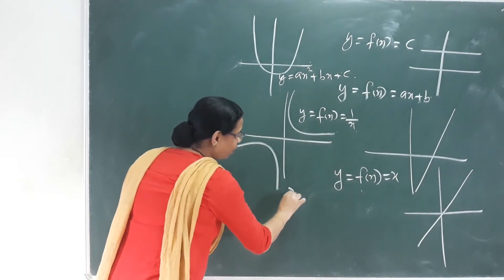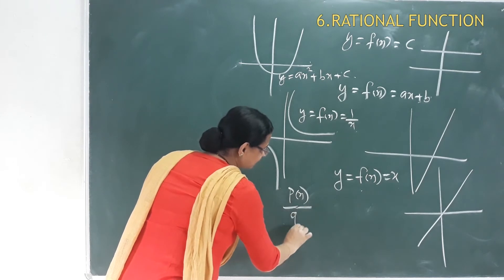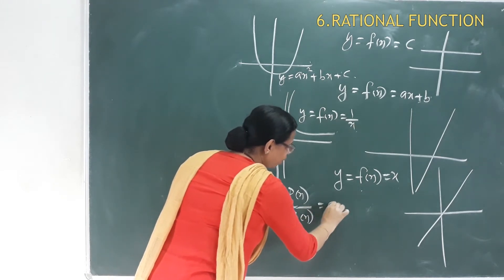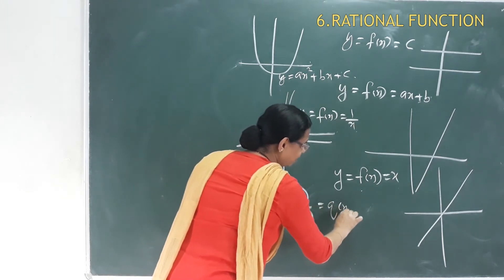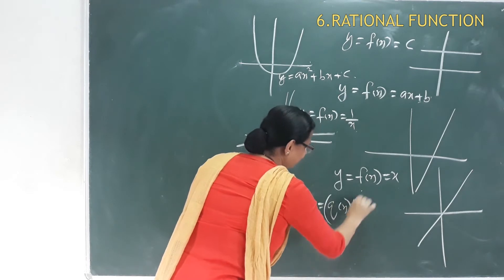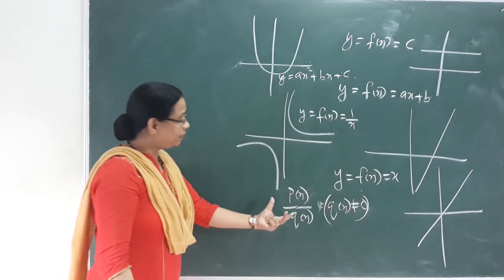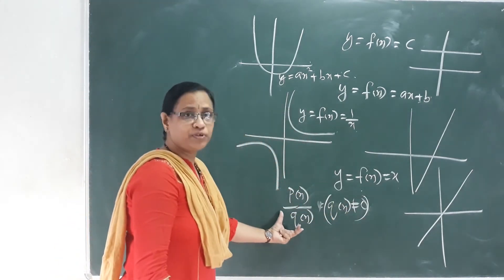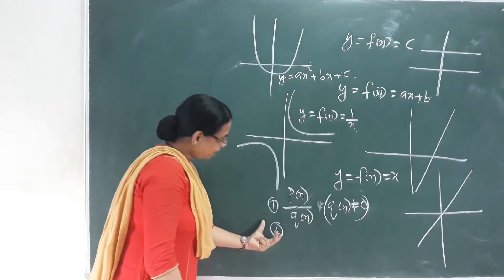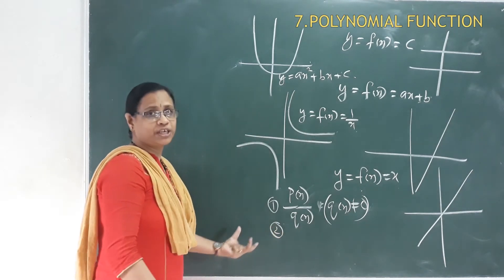The rational function is p(x) divided by q(x), where q(x) is not equal to 0. This is the rational function graph. We represent every such graph. Next is the polynomial function.